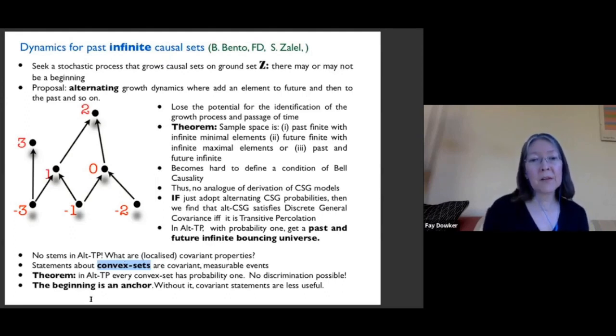So in transitor percolation, the beginning is an anchor, without which covariance statements such as the covariance statements of convex set inclusion have no purchase. There's no discriminating that you can do between one causal set generated by alternating transitor percolation and another causal set generated by alternating transitor percolation. They all look the same as far as the convex sets are concerned.